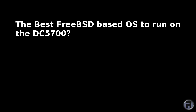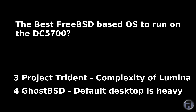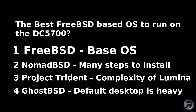What's the best FreeBSD-based OS to run on the DC 5700? GhostBSD — the default desktop is very heavy. Project Trident — the complexity of Lumina can put some people off. NomadBSD — it's a little bit complicated to install. And FreeBSD — you only get the base OS, and that's its strength. While I've given the negatives for all of them, they all have positives, and those negatives can define someone's use of the OS.